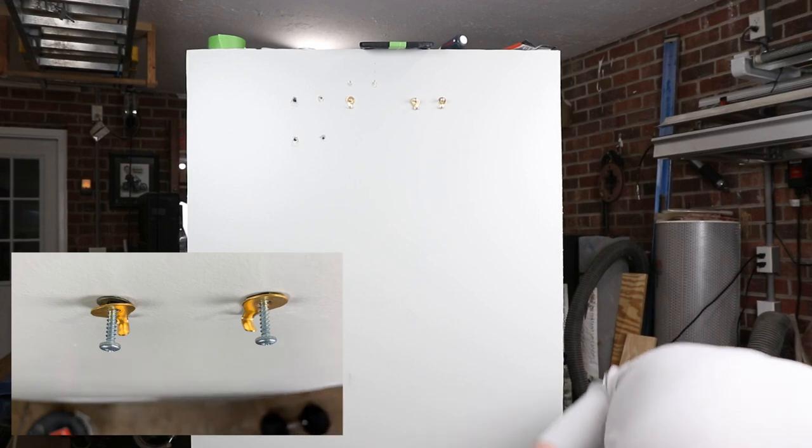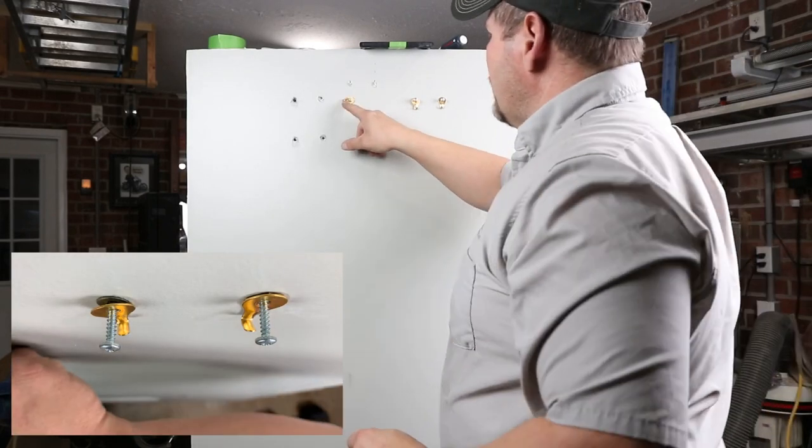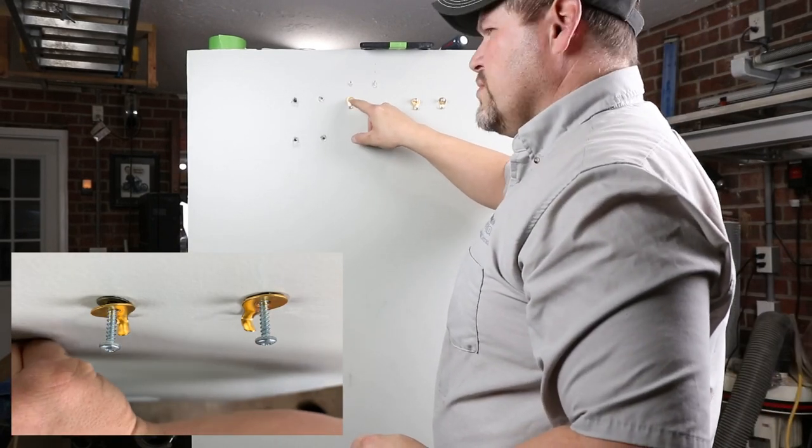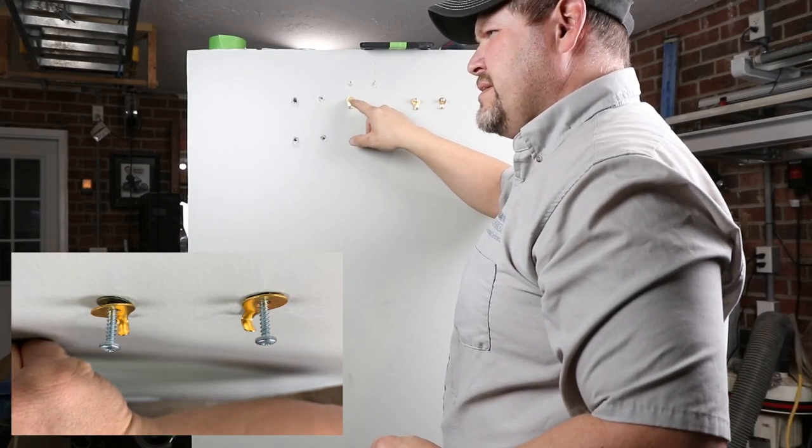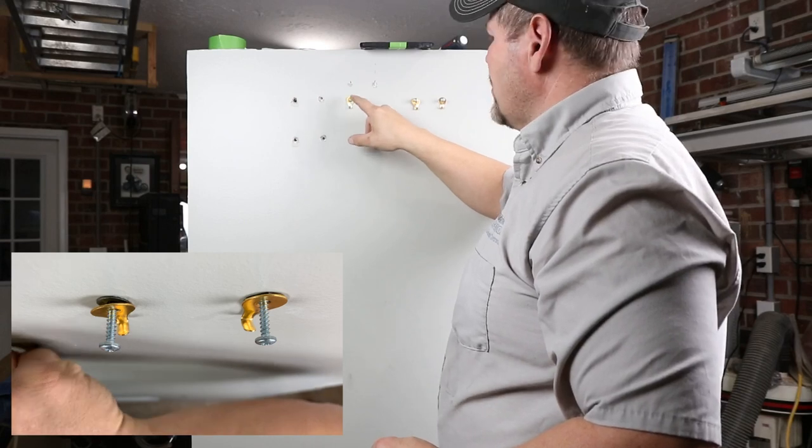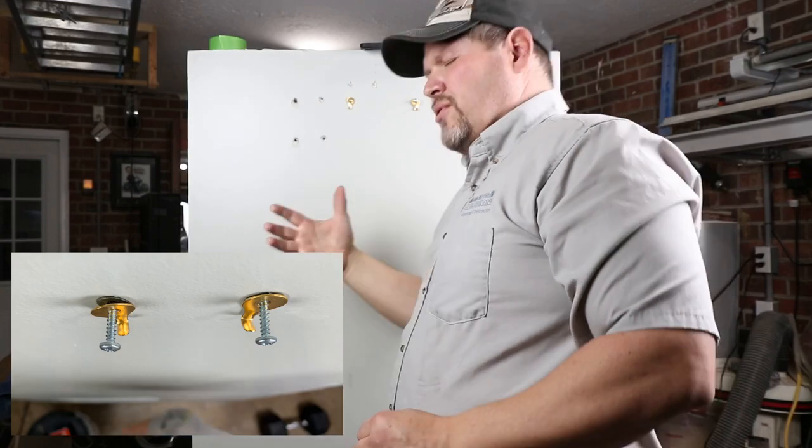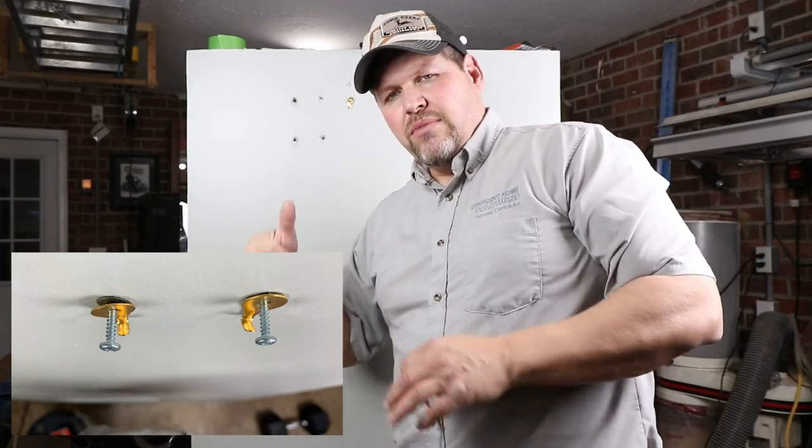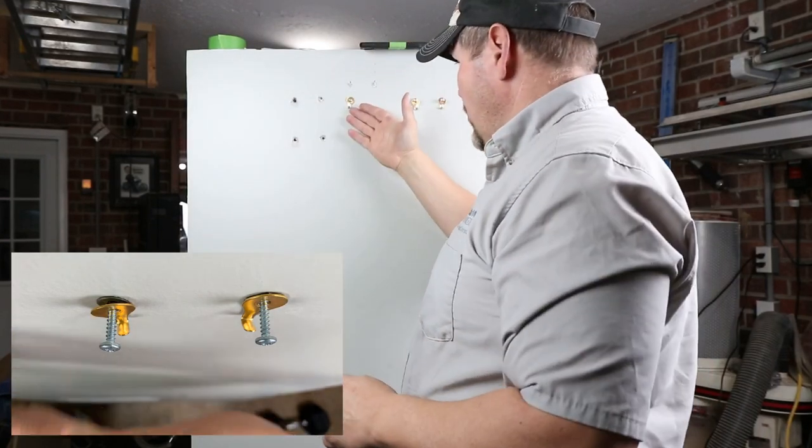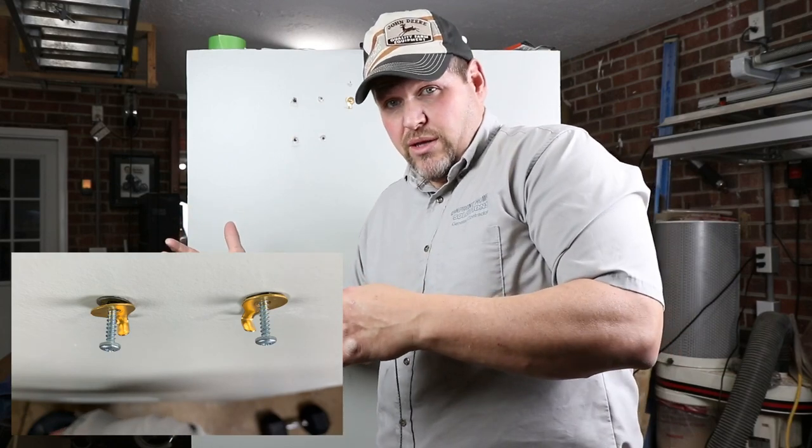Well, remember we took this other anchor that was the Hillman Wall Dog with the screw in that, I think that failed at like 30. Okay, it failed at 40 pounds, but it worked at 35. So it made it somewhere between there.